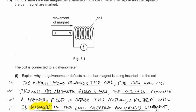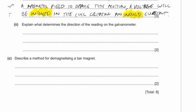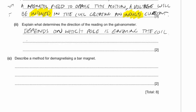The word 'induced' means it's happening without physical contact — because of a changing magnetic field next to a conductor. You can have induced EMF, induced current, or induced charge. The direction of the reading on the galvanometer is determined by which pole enters the coil. The direction of the induced EMF will oppose the change producing it — Lenz's law.